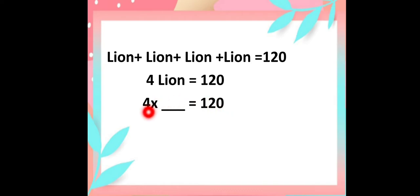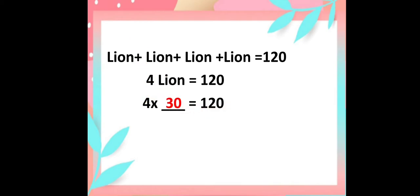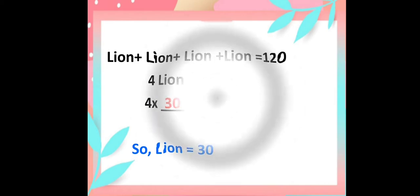I know very well that 4 times 3 is 12, so here 4 times 30 is 120. So one line has the value 30. Now I have the value of line, that is 30.